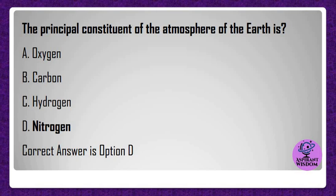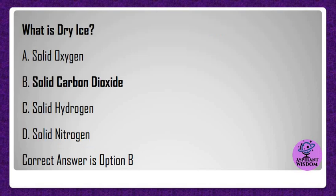What is dry ice? A) Solid oxygen, B) Solid carbon dioxide, C) Solid hydrogen, D) Solid nitrogen. Correct answer is option B.